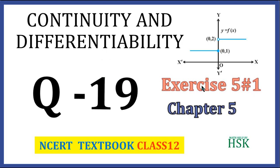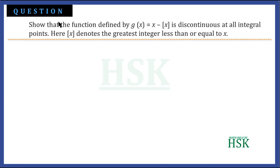This is question number 19 of Exercise 5.1 from the chapter Continuity and Differentiability. The question says: show that the function defined by g(x) is discontinuous at all integral points. Here x written in square brackets denotes the greatest integer less than or equal to x, so g(x) = x minus the greatest integer of x.